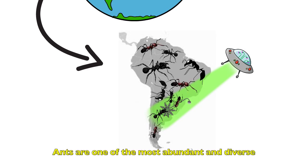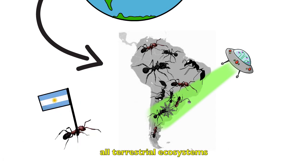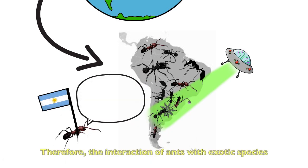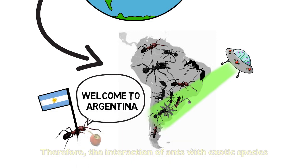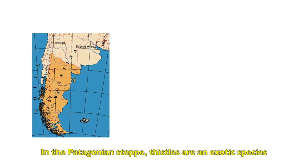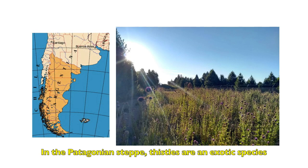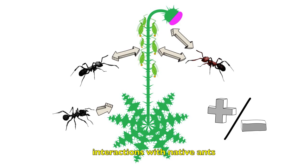Ants are one of the most abundant and diverse groups of insects, and they are found in almost all terrestrial ecosystems. Therefore, the interaction of ants with exotic species in the recipient community is highly probable. In the Patagonian steppe, thistles are an exotic species widely distributed that establishes positive and negative interactions with native ants.